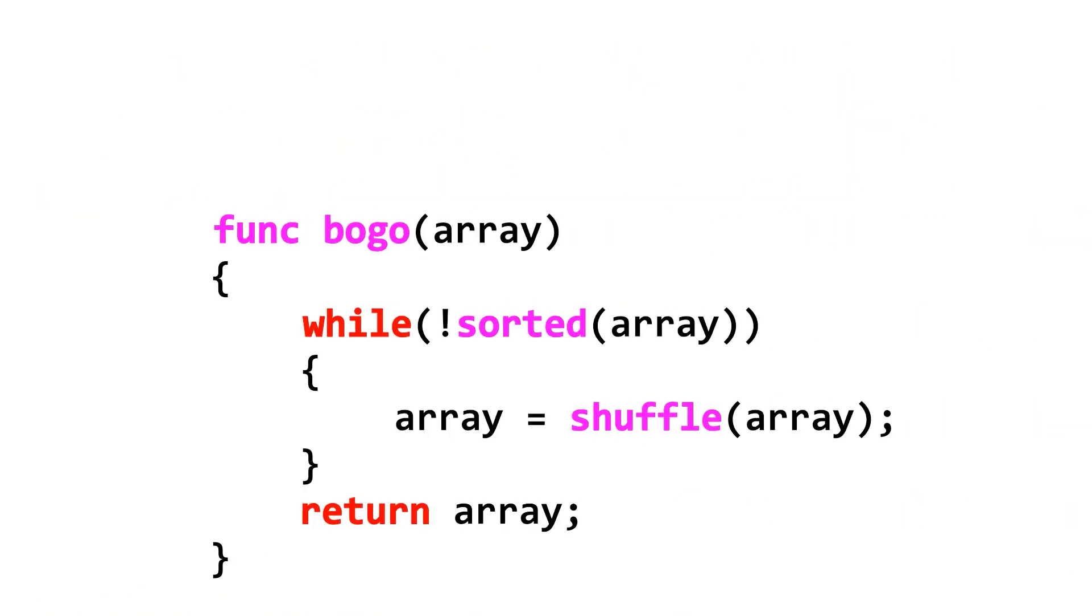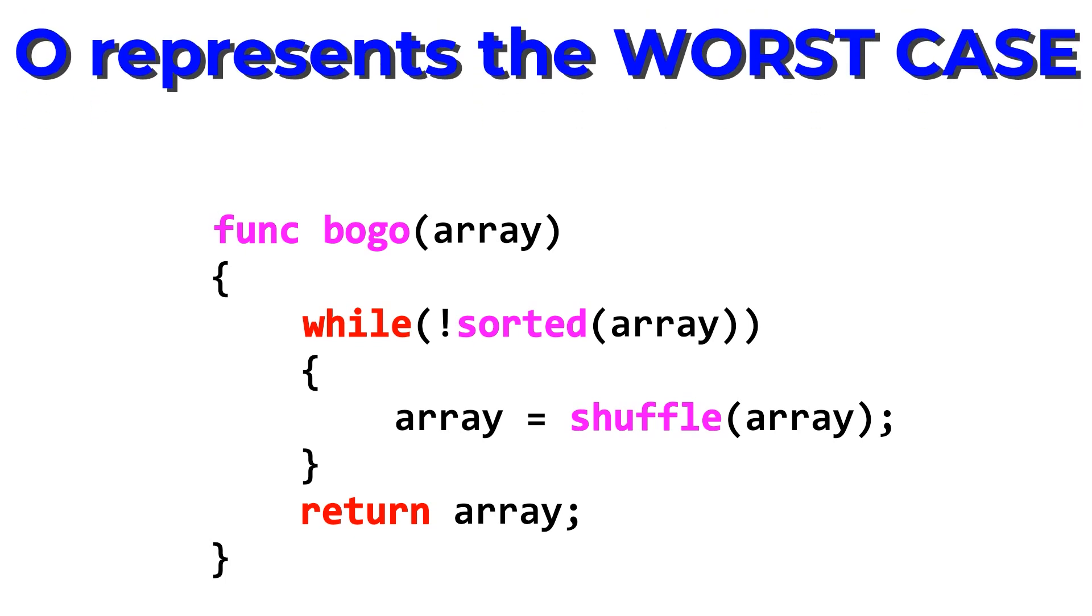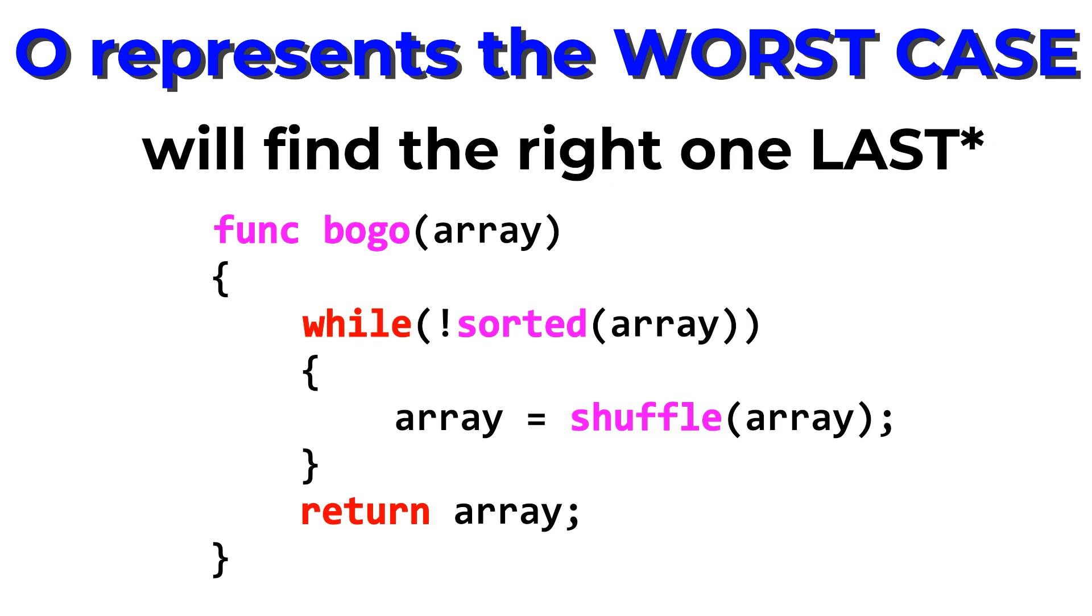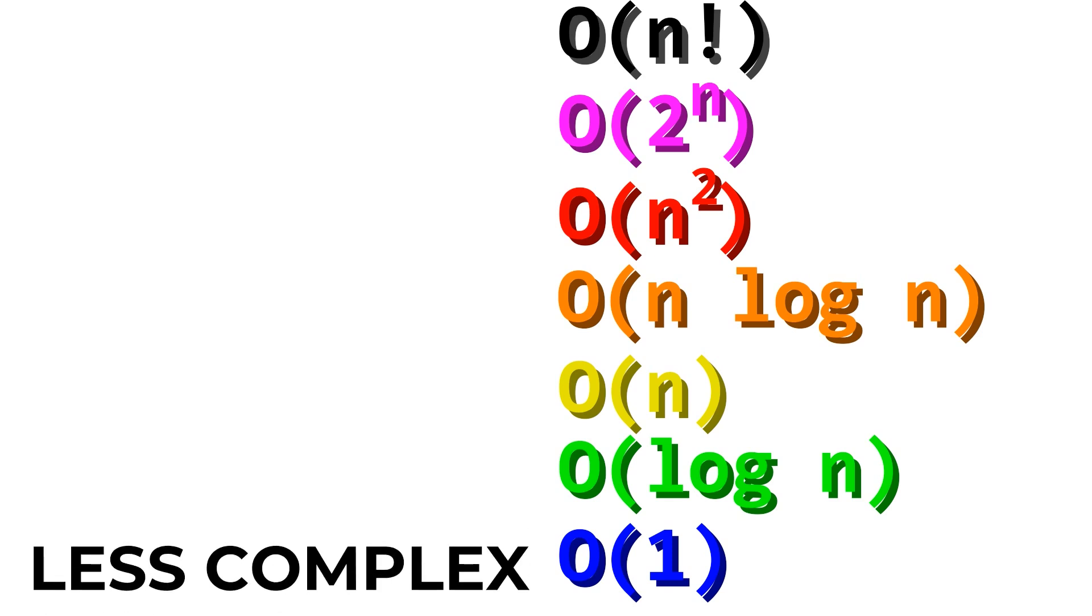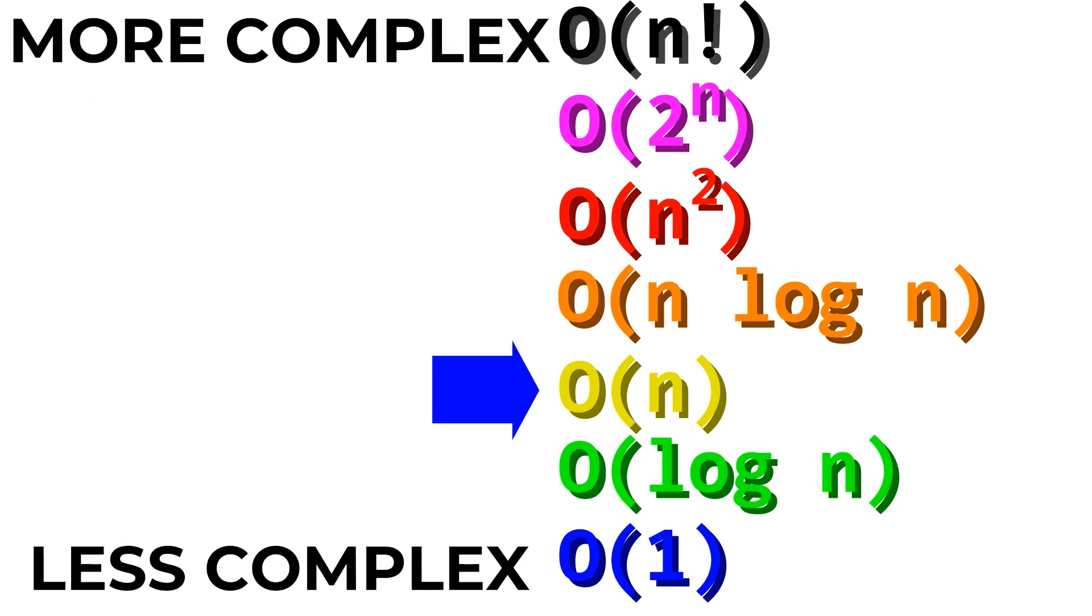How inefficient is this? Well, big O notation will always represent the worst case scenario, and bogosort in its worst case will have it guess the correct thing last. Therefore, bogosort has the wonderful time complexity of big O of n factorial. If anything is more time complex than that, throw your computer out the window! So these can roughly be organized into a hierarchy from less complex to more complex. So now that we know what time complexity is, we can get to the million dollar question.